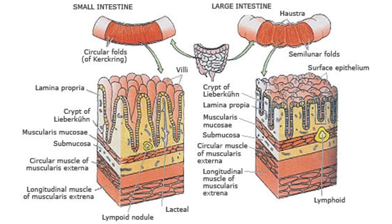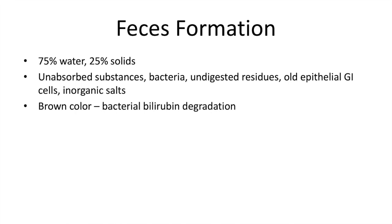Here we can see the comparison between the small and large intestinal walls, noting that the crypts are a little larger in the large intestine. The normal feces are roughly 75% water and 25% solids because water helps for smoother defecation. The solid component is composed of unabsorbed substances, bacteria, undigested food residues, epithelial cells from the GI tract, and also inorganic salts. About 500 milliliters of food enters the large intestine, but only 150 milliliters become feces.